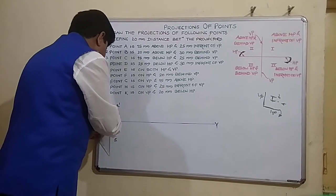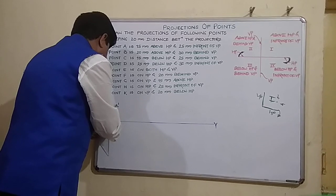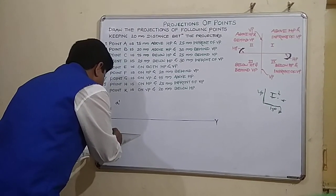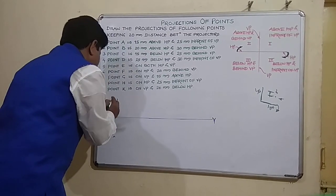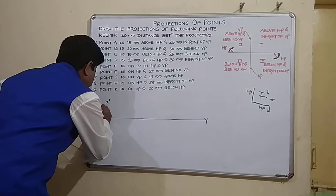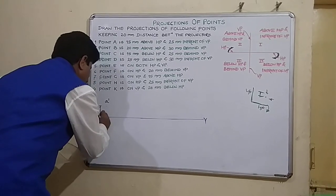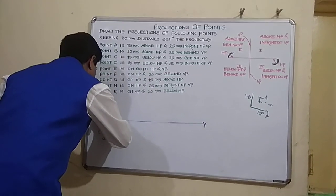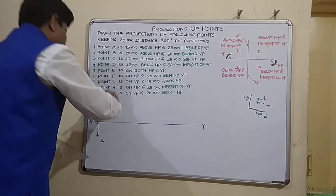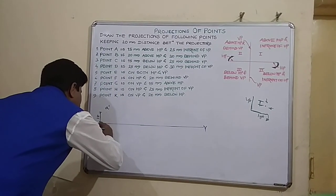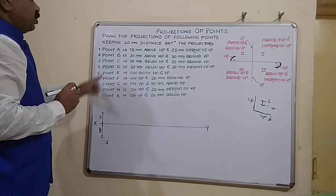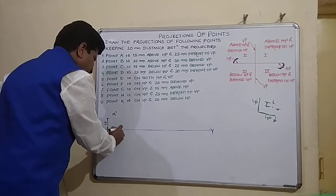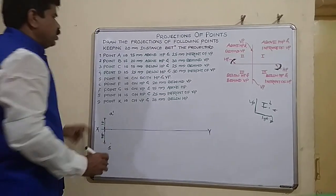Now I will show the dimensions. The front view point is above HP — that is why it is shown with a dash. The top view point is 25 millimeter in front of VP, so it is shown as a plain point. The distance between projections is to be kept 20 millimeters apart, so from this position we take 20 distance and draw the second projection.